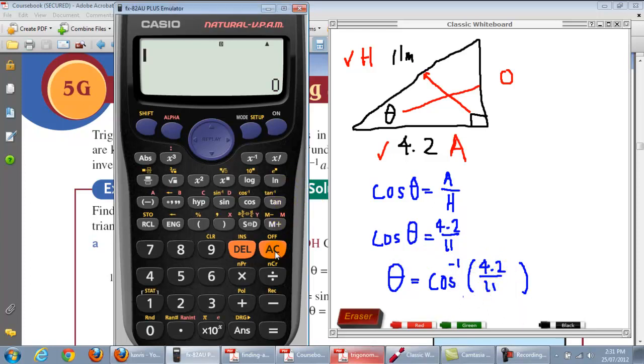Using the calculator is quite easy isn't it? You just press shift, cos inverse, 4.2 divided by 11. Put the brackets and there it is. So what's the angle? So the angle works out to be 67.5 degrees.